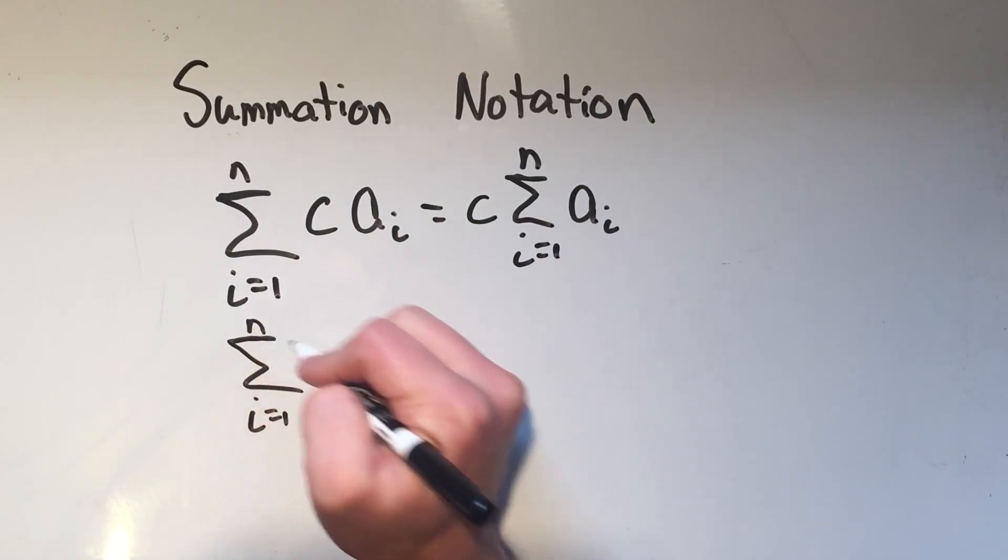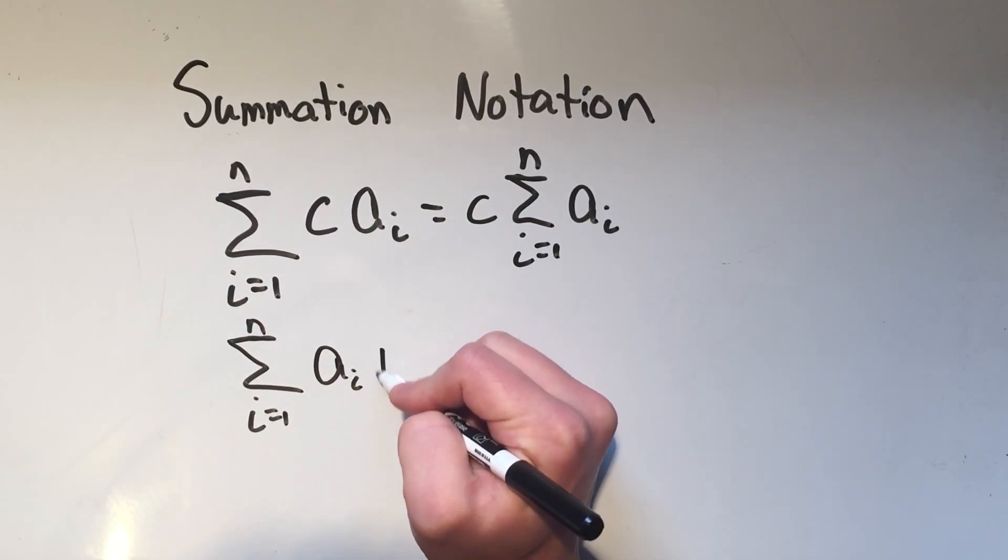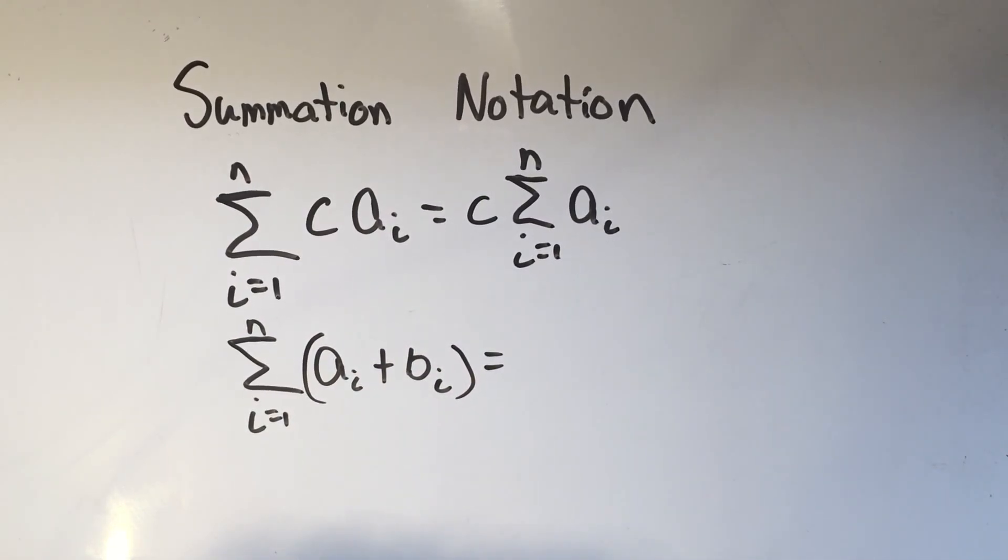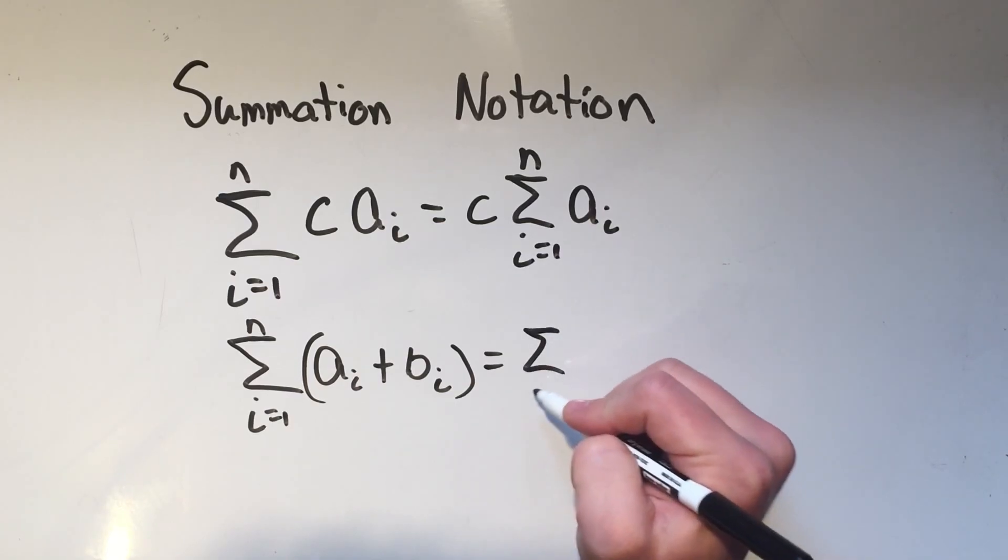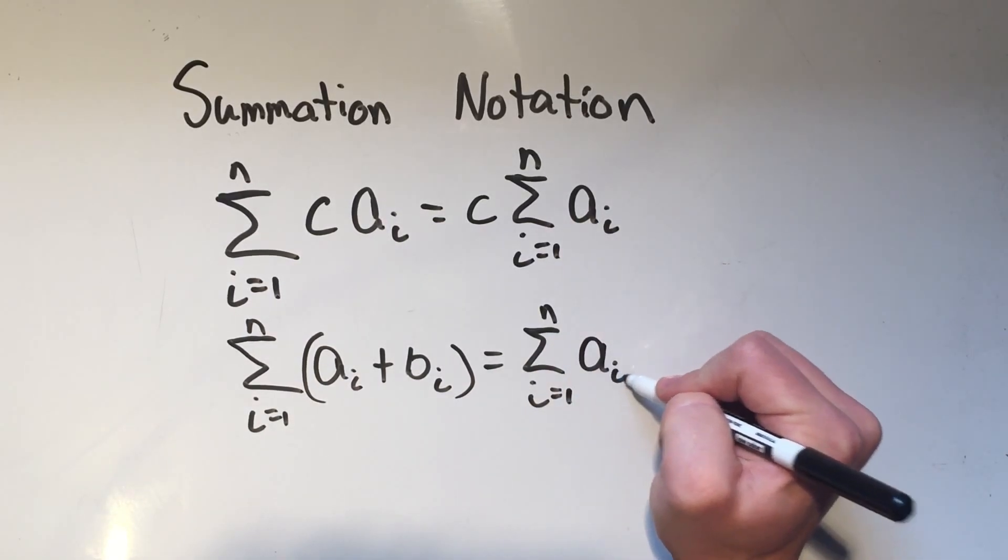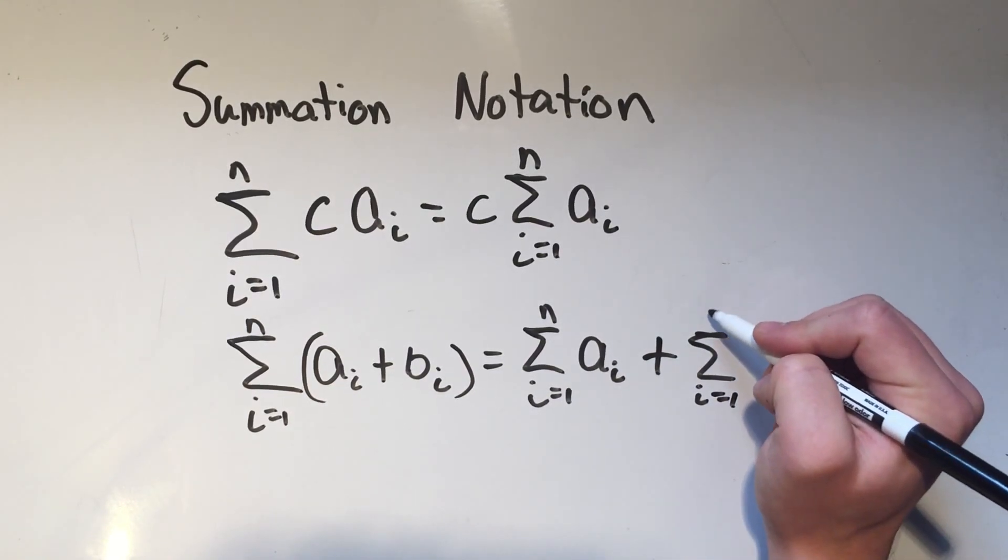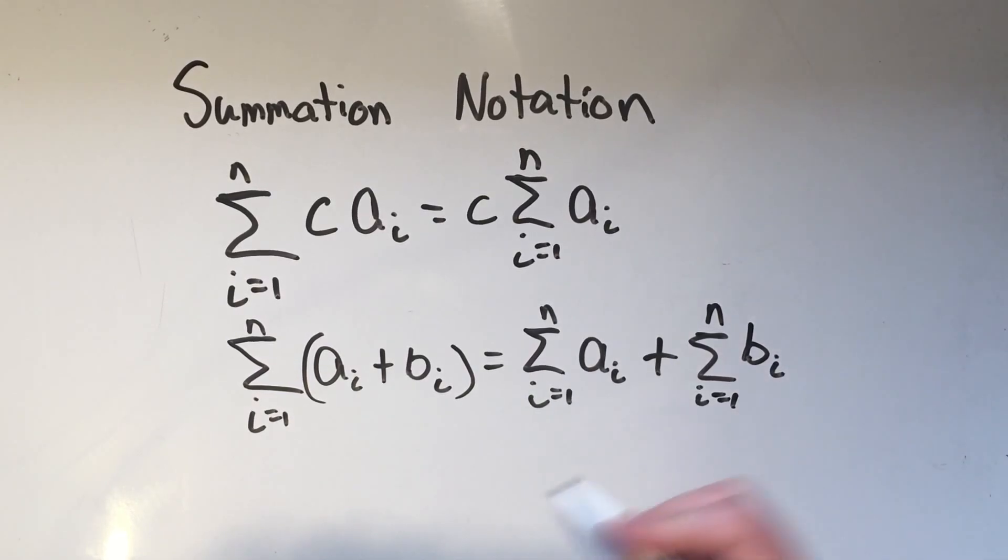Also, if I have the sum of 2 different things, A i plus B i, well, I can sum A i and then add on B i. And that sort of makes sense, right? If I have the sum of 2 things added, that's the added of 2 things summed. You will use these properties once you start doing integration. That's where these really come up.